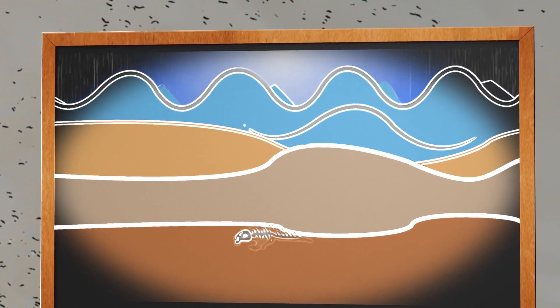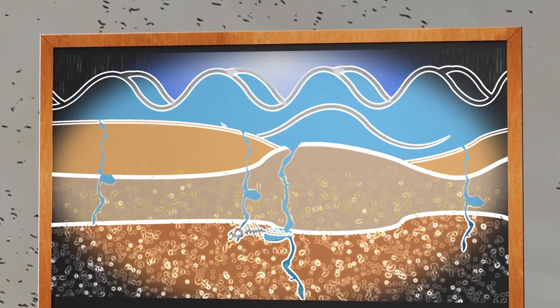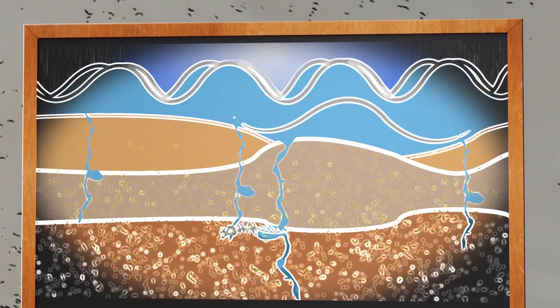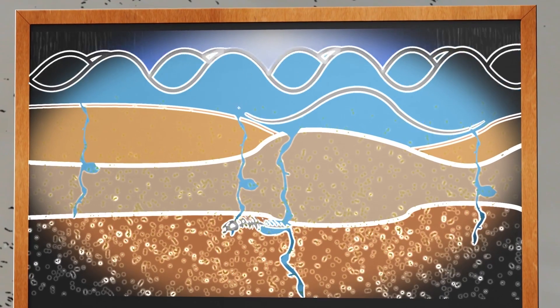water from the ground seeps into the animal skin and forms a crystal cast with deposited minerals. This process is called permineralization.